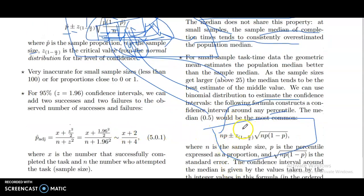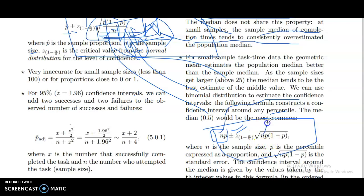N is the sample size, multiplied with the percentile expression. Plus or minus: take (1 minus alpha), divide by 2, then subtract from 1, then multiply with the z-value. Then p is the percentile; multiply, then subtract from 1, to get p times (1 minus p).